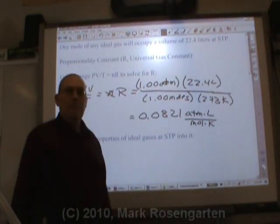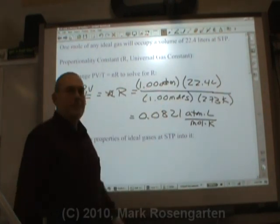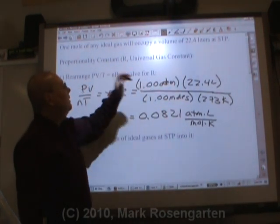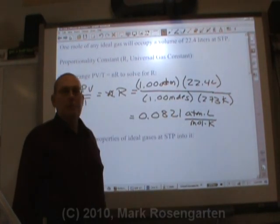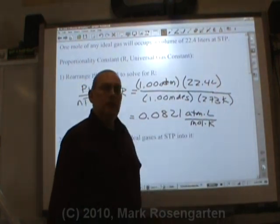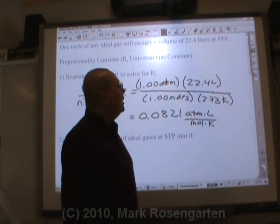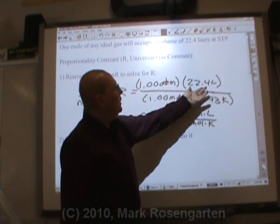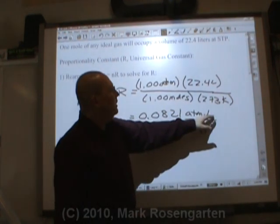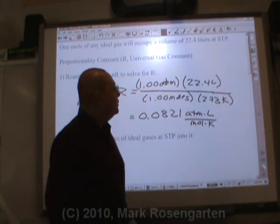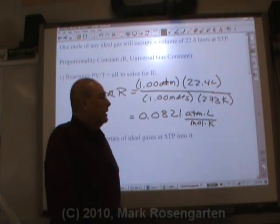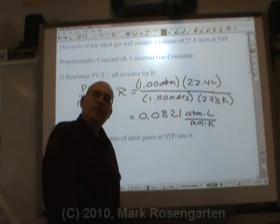Instead of using one atmosphere when you get R, you could use 101.3 kilopascals or 760 millimeters of mercury. And that will give you R in kilopascals or millimeters of mercury. If you need to find R in terms of milliliters, no problem at all. Just convert this to milliliters, 22,400 milliliters. And then that will give you atmospheric milliliters per mole kelvin. So you can make R whatever you want for whatever unit you're using. And that is the ideal gas law.